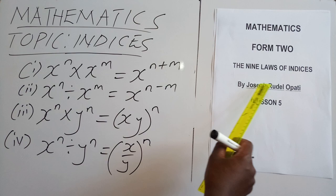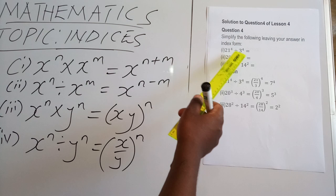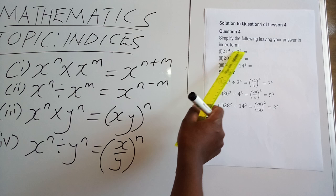So in our lesson five, remember, I am your teacher Joseph Rude Lopati. In our fifth lesson, we are going to go through the questions I left you in lesson four — the questions in regard to the fourth law, that is division of numbers to a similar power. So: 21 power 4 divided by 3 power 4.